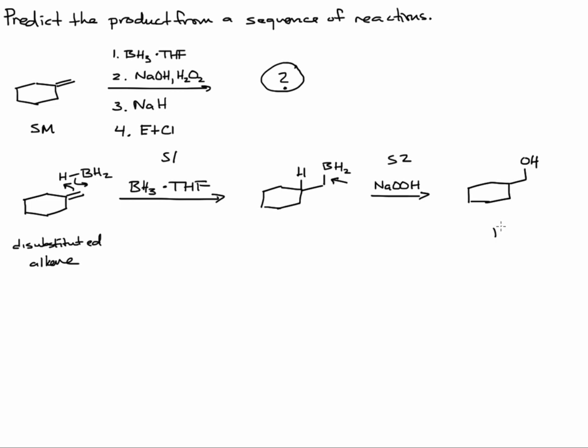So now we have a primary alcohol. In step three we're treating with sodium hydride. It's important to verbalize what the reagent is. Sodium hydride is going to be a salt in which sodium bears a positive charge and hydrogen bears a negative charge. So hydride means hydrogen with a pair of electrons and a negative charge.